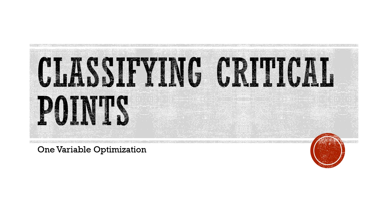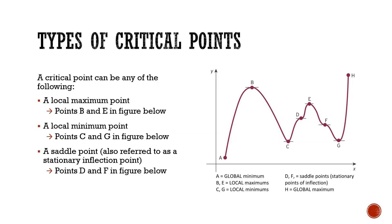In the last video, we defined what critical points were. In this video, we're going to talk about how to classify what those critical points are. To summarize what we learned in the last video, a critical point is wherever we have our first derivative — that slope — equal to zero. Now this could be at a local maximum, at a local minimum, or sometimes neither, at what we call a saddle point.